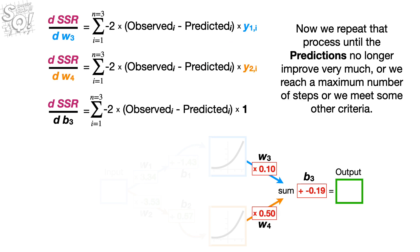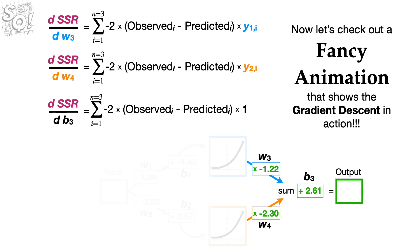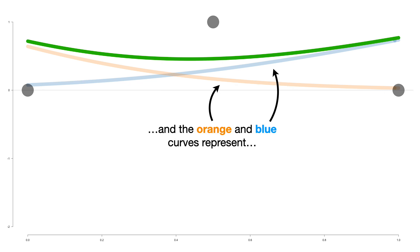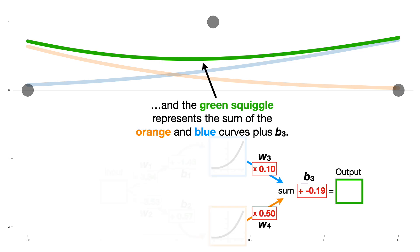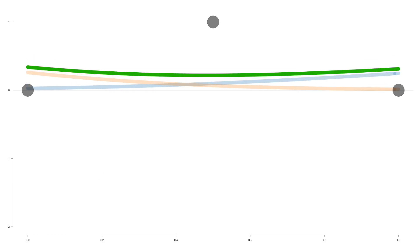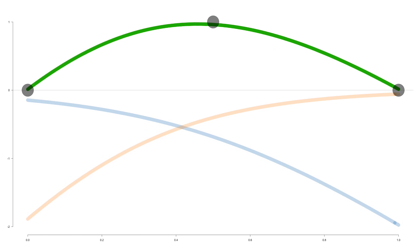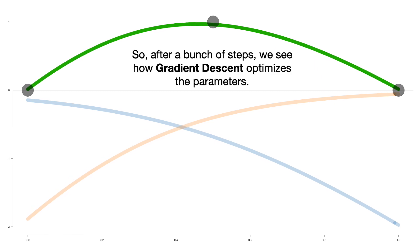We repeat that process until the predictions no longer improve very much, or we reach a maximum number of steps, or we meet some other criteria. Now let's check out a fancy animation that shows gradient descent in action. The gray dots represent the training data, the orange and blue curves represent the hidden layer outputs, and the green squiggle represents their sum plus B sub 3. Watch how the green squiggle fits the data after 175 steps of gradient descent.